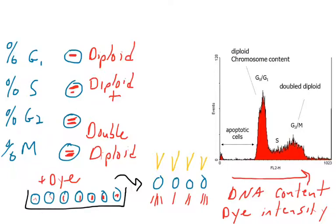You go 0 to this figure 1023. The more you go, the higher on the x-axis, the brighter the intensity of the signal from the cell, which represents the amount of dye in the cell, which represents the amount of DNA in the cell.